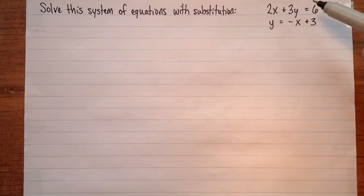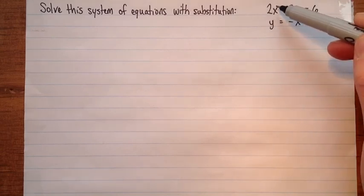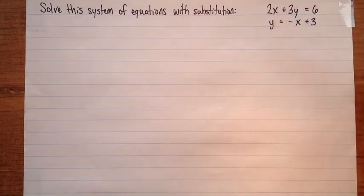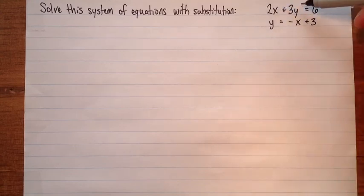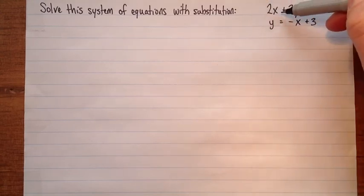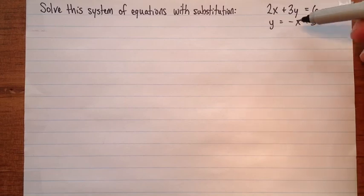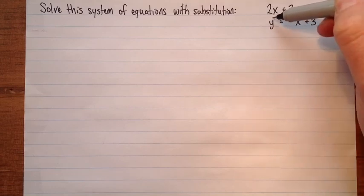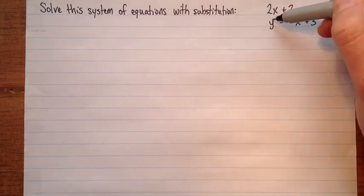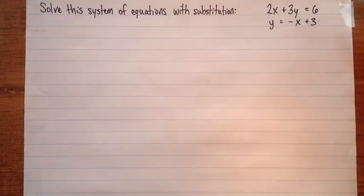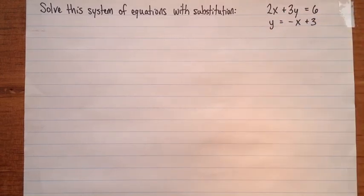For example, maybe we find out that x is 2 and y is 7, and that would mean that if we substitute those numbers into the equation, the left side will come out to 6, and the other equation's two sides will also be equal.